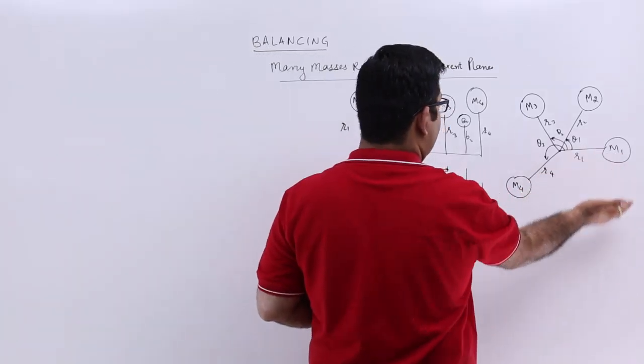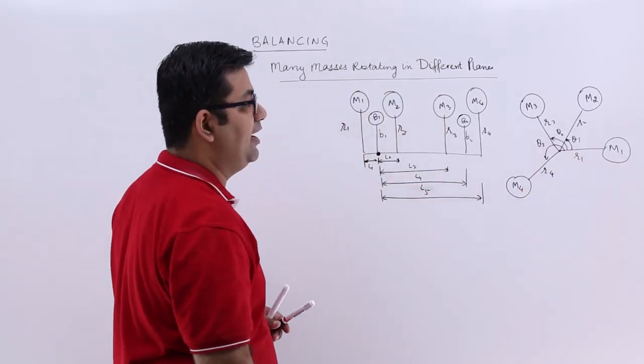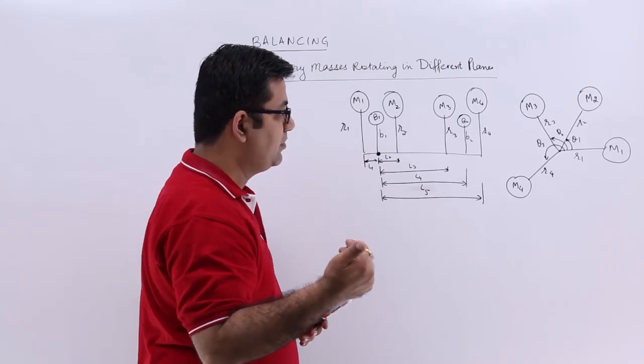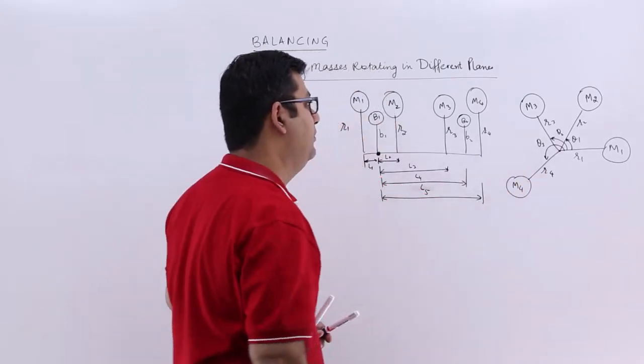And we assume that this mass M1 is horizontal. So we have one reference, you can see a line from where we measure the orientations of the rest of the three masses.